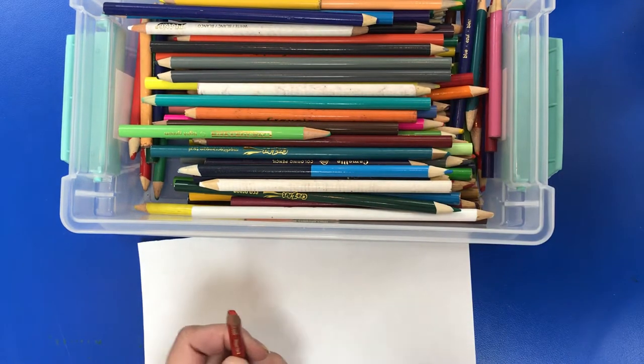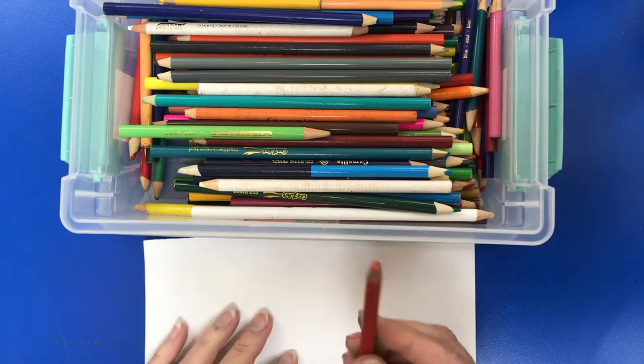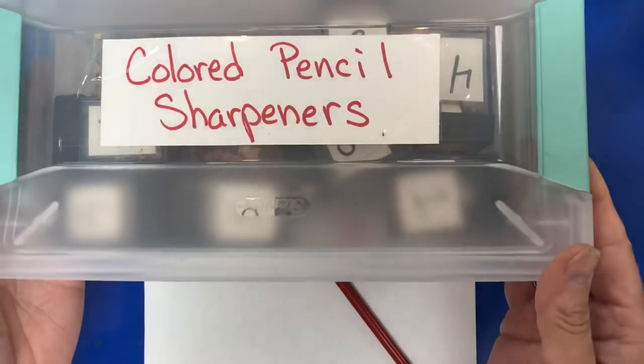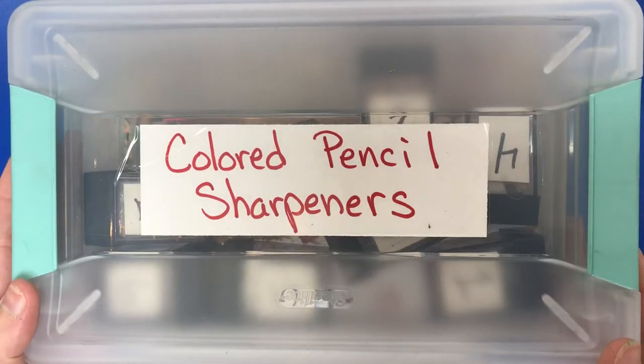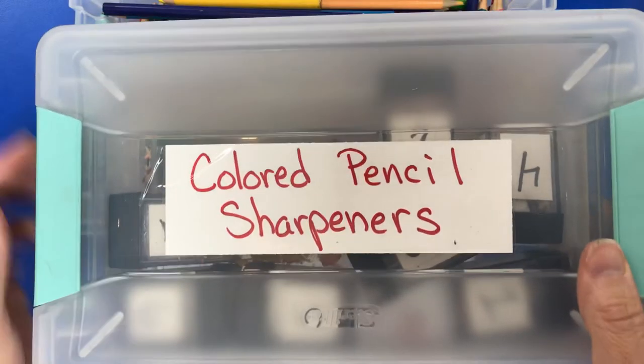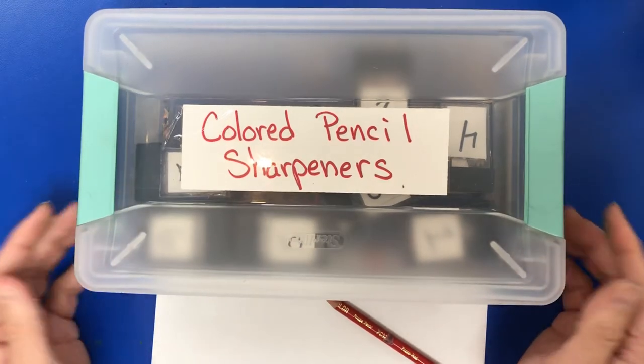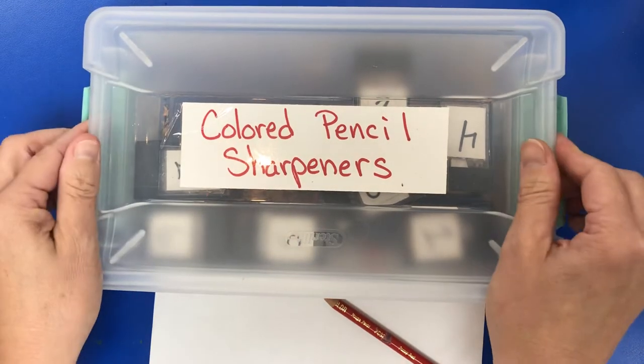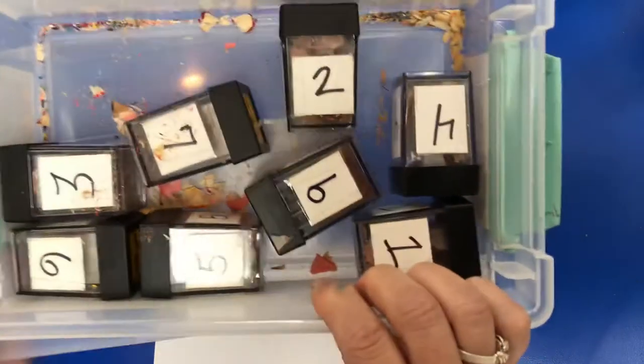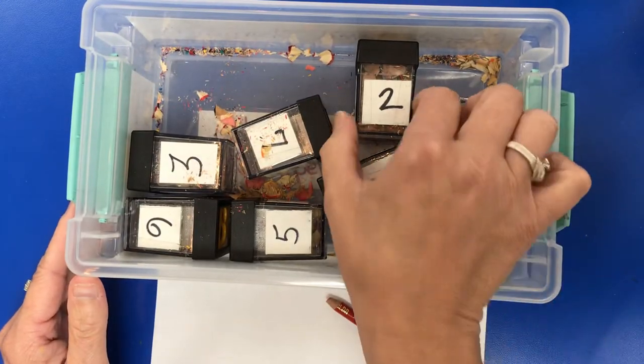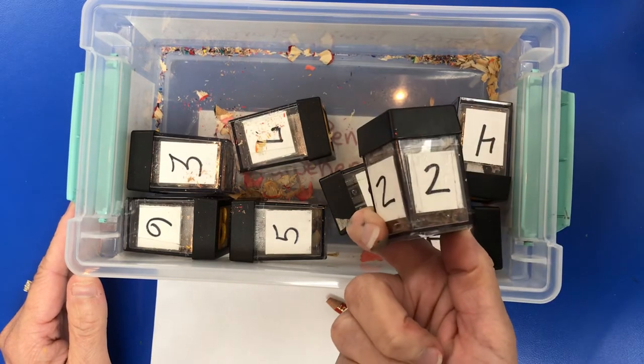I'm going to sharpen this now. I have a special bin for colored pencil sharpeners. These are specific for colored pencils. Again, this is in a bin similar to what you have with your colored pencils. You're going to unlock this and underneath you're going to find your table number sharpener.